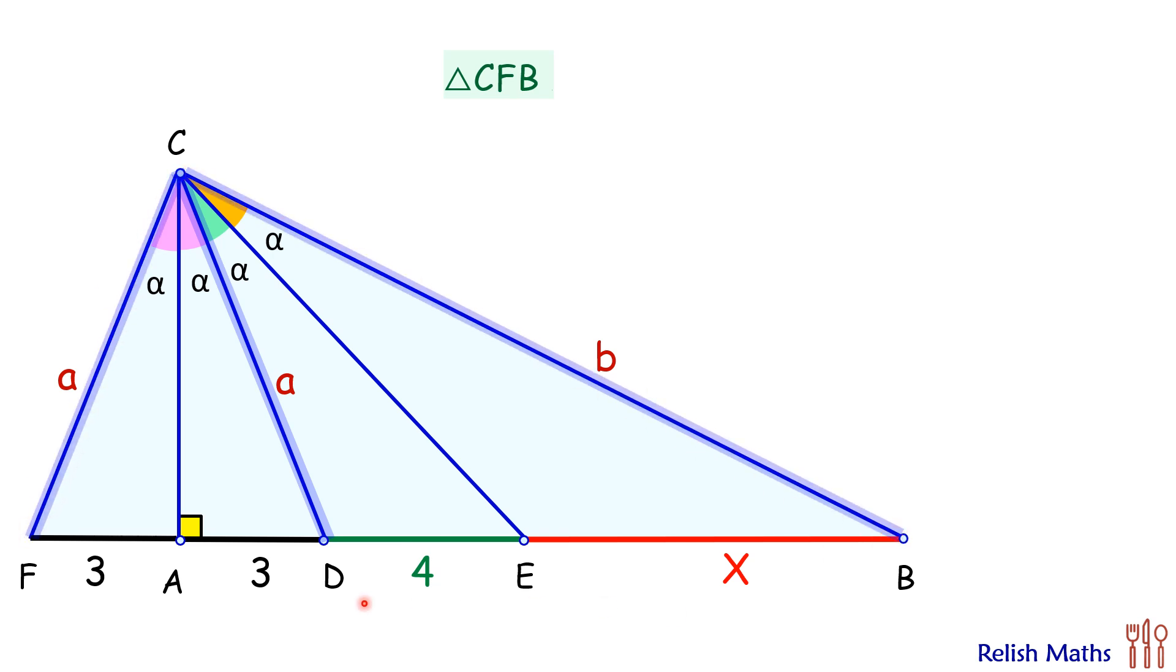Thus the ratio of sides, that is CF upon CB, this ratio will be equal to FD upon DB. Now putting the values, CF is a and CB is b, so a upon b is equal to 6 upon 4 plus x.